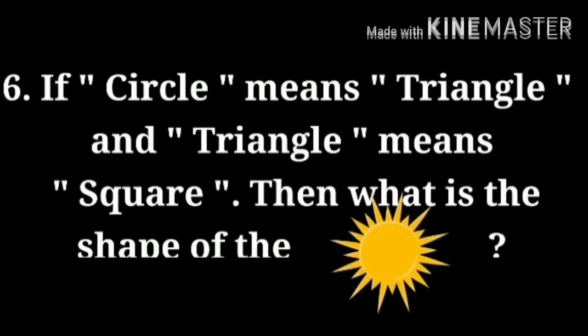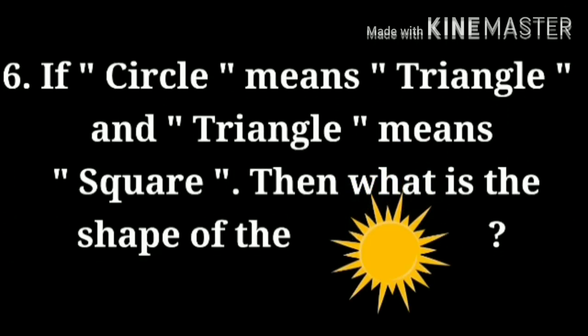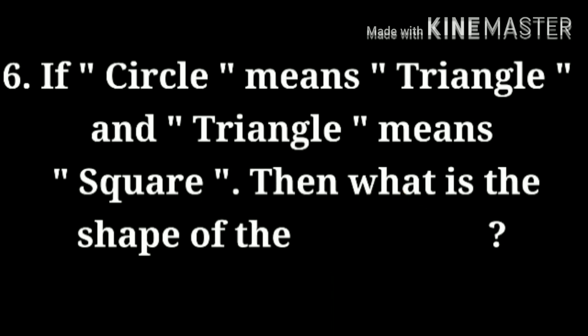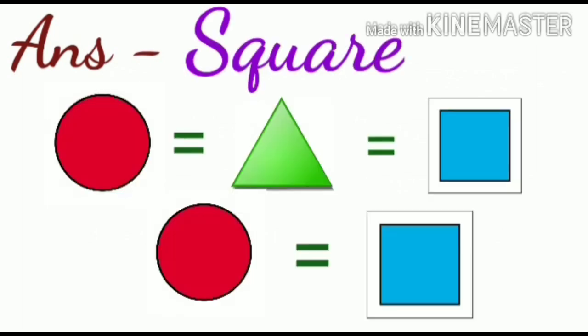Question number 6: If circle means triangle and triangle means square, then what is the shape of the sun? Hmm! Think and tell me the answer. Answer is square. Because circle is equal to triangle and triangle is equal to square. That means circle is also equal to square. So the shape will be square.